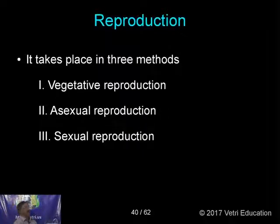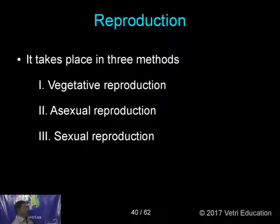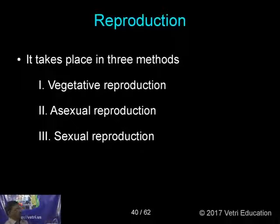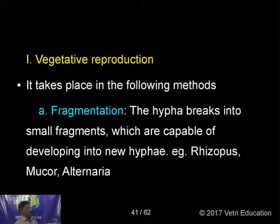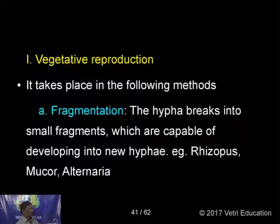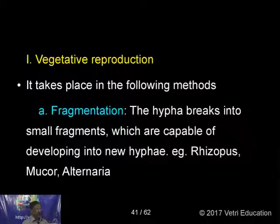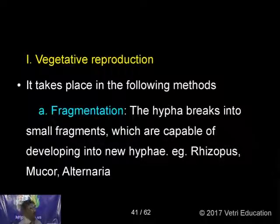Reproduction in Fungi takes place in three methods: vegetative reproduction, asexual reproduction, and sexual reproduction. Vegetative reproduction takes place by the following methods. First, fragmentation — the hyphae may break into pieces or small fragments, each capable of developing into new hyphae. Accidentally the hyphae may be cut into pieces; each piece will develop into a new fungus. This is common in Rhizopus, Mucor, and Alternaria.